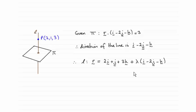And this part is the direction of the line, which we can pick up from the equation of the plane we're given. The vector i minus 2j minus k is always a vector which is perpendicular to a plane.